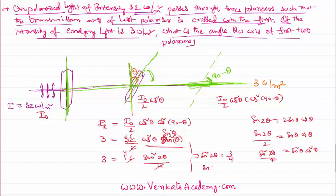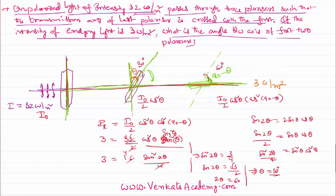Substituting: 3 = 16 · sin²(2θ)/4, which gives sin²(2θ) = 3/4, so sin(2θ) = √3/2. Therefore 2θ = 60°, which implies θ = 30°. The angle between the first and second polarizers is 30°, and between the second and third is 60°, confirming the first and last are perpendicular. Thank you for watching — keep coming back for more video lessons!